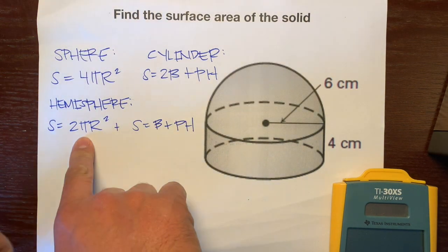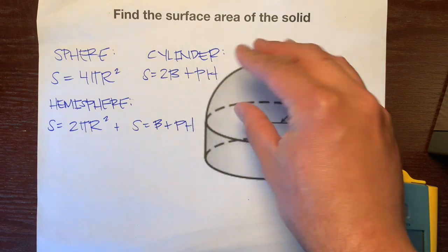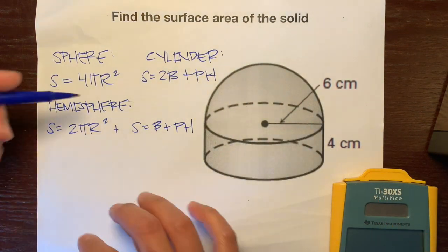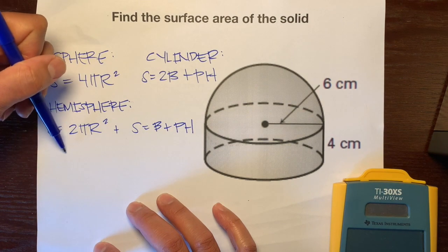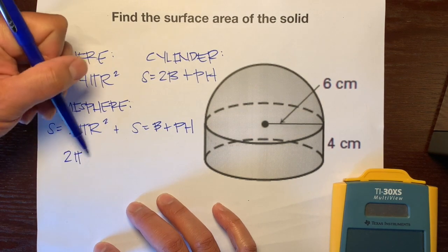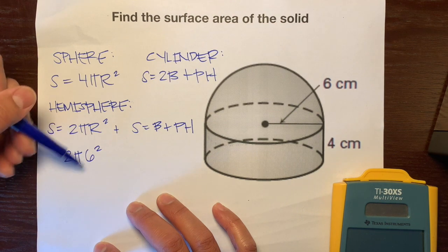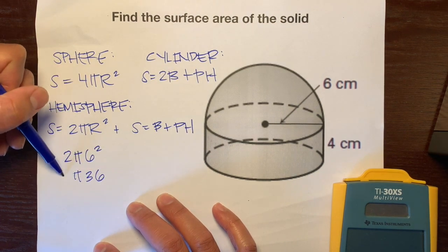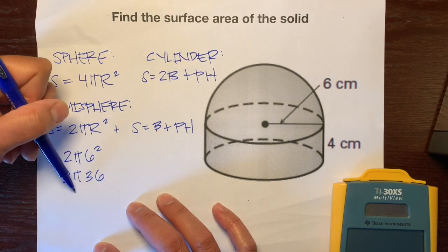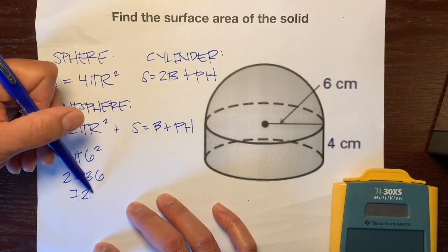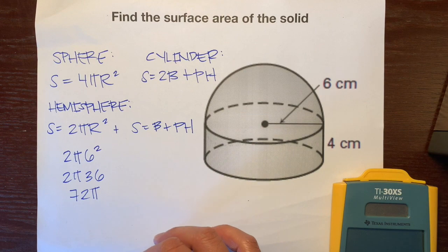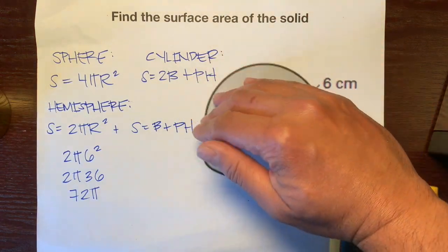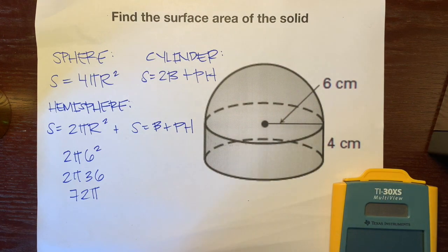Let's figure out what the surface area of this hemisphere is. It looks like our radius is 6. So we'll plug that in. 2π times 6 squared. 6 squared is 36, π times 2. 2 times 36 is 72π.